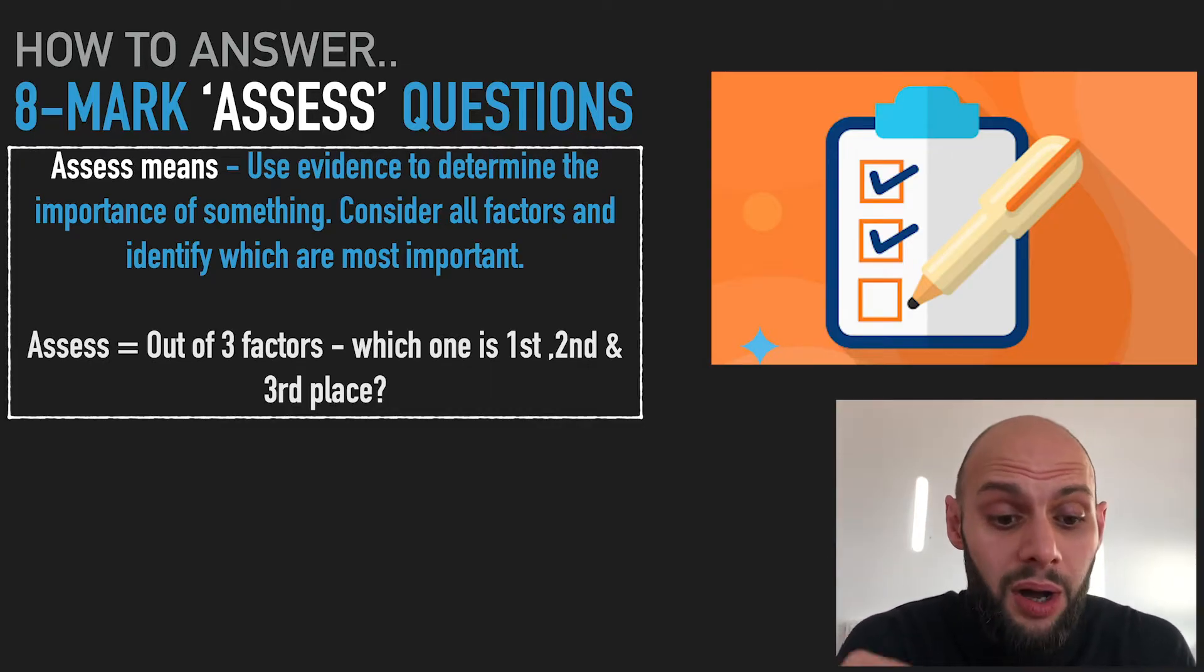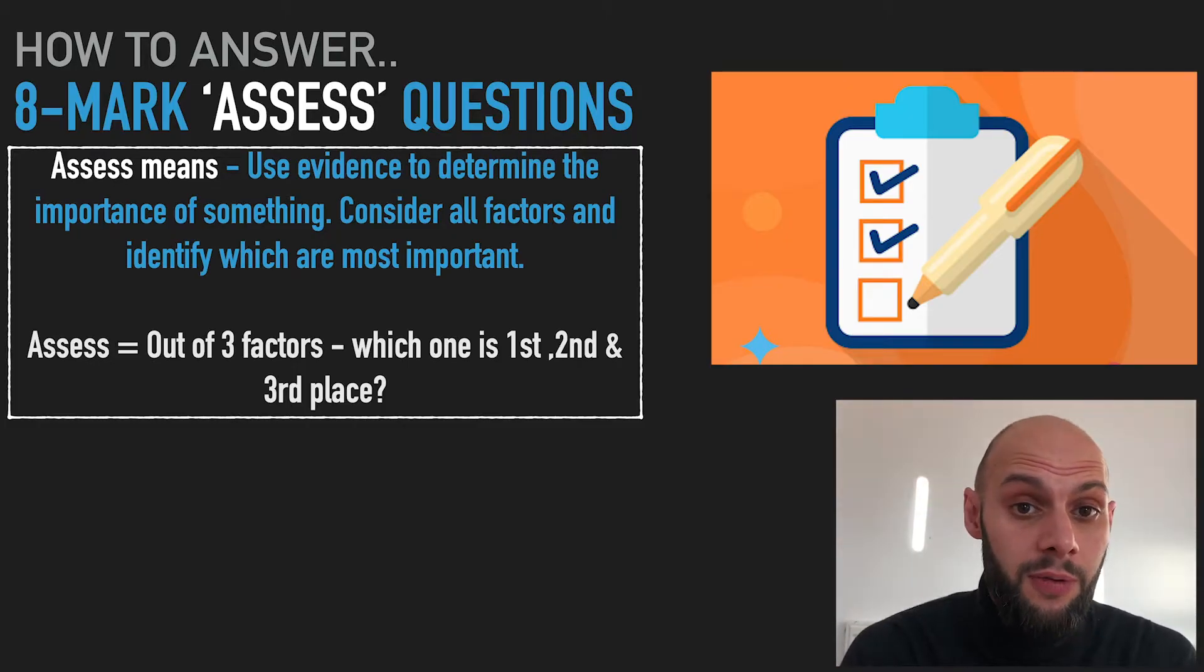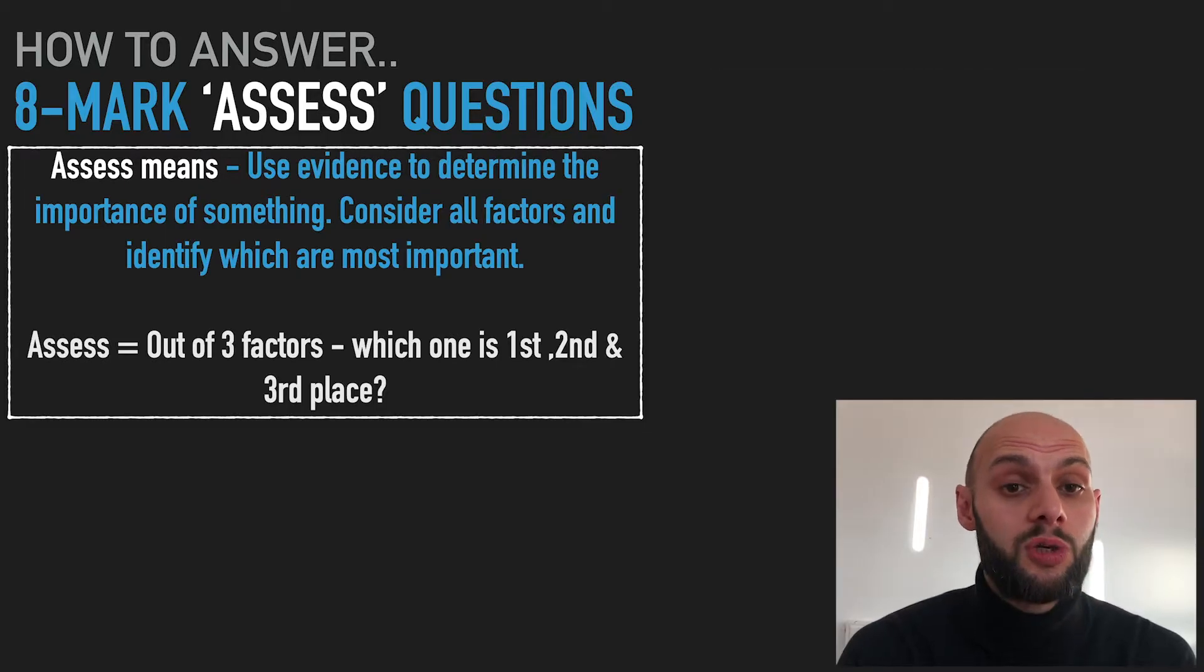In the assess question they might give you one factor and then you have to bring in two factors of your own, but they might not even give you that one factor. They might be looking for you to bring up three factors in general. So you're going to have three things and you're going to place them in a scale of one to three of importance.